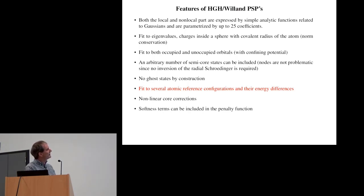We typically include something like twenty to thirty different configurations containing all kinds of ionized and excited atomic configurations. We fit all the quantities I pointed out before. We also introduced the non-linear core corrections which help for spin-polarized systems, and very recently we included terms to improve the softness, to get some best compromise between softness and accuracy.